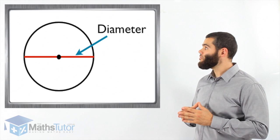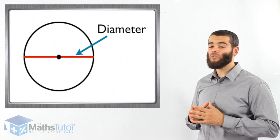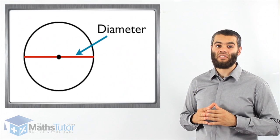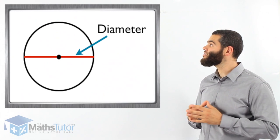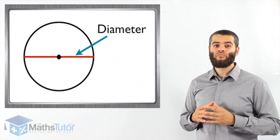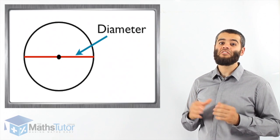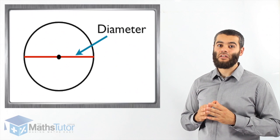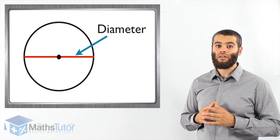In a circle, there is a line — an interval — that goes from one end of the circle to the other end, and it goes through the center. This is called the diameter. It goes through the center of the circle from one end to the other. It has to go through the center. We're going to use the diameter in several lessons later on, so it's very important that you know what the diameter looks like.